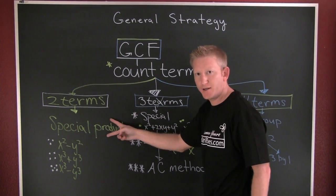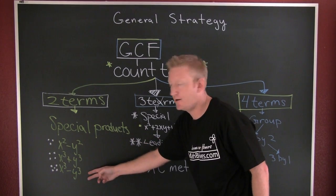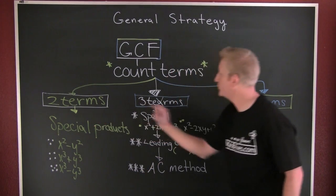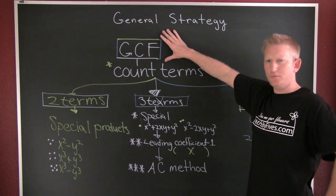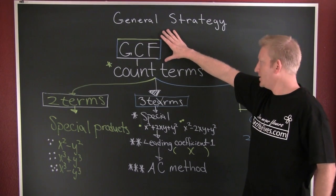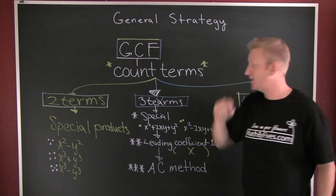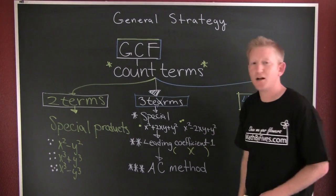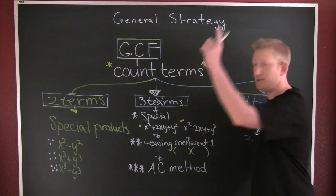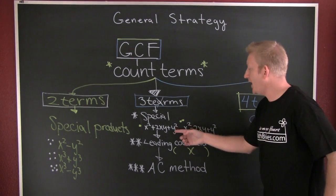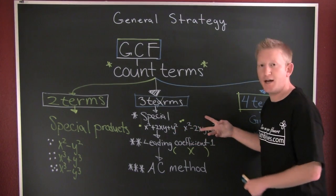If you count two terms, you're going to be looking for special products. If after taking out the common factor you count three terms, first try to get out on the cheap and easy — check if it's a special product, like a perfect square trinomial.